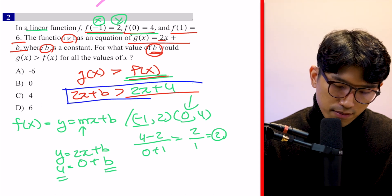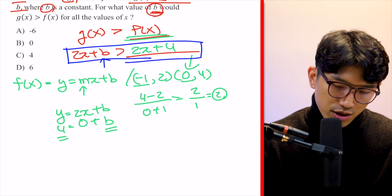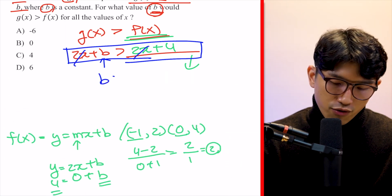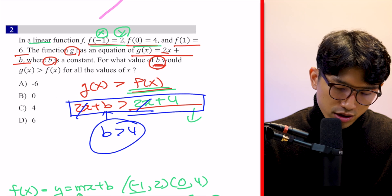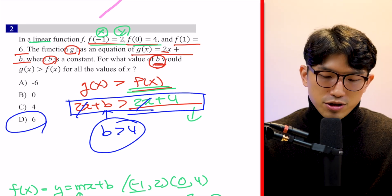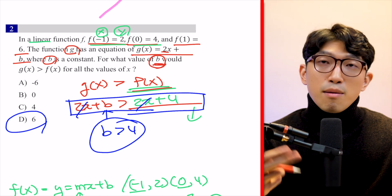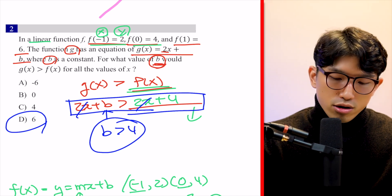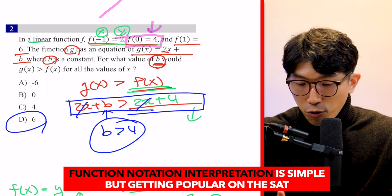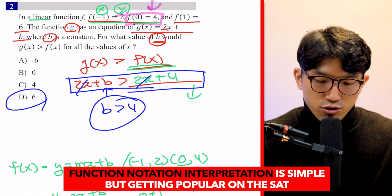Simplifying the inequality: subtracting 2x from both sides gives B > 4. Choice D is the only possible answer. The main takeaway here is your ability to generate a line equation from two coordinates and, more importantly, understanding how function notation works — that was the harder part College Board used to make this question difficult.